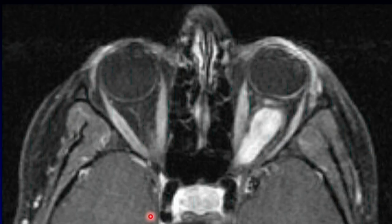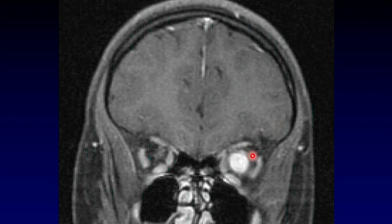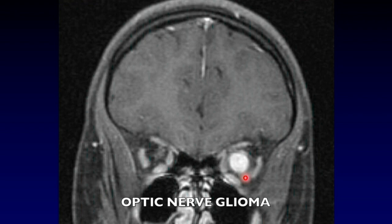Here's a lesion that is running right along the expected course of the optic nerve. When we see it in coronal image, it is uniformly enhancing and it is a mass of the nerve itself. There is no preserved central nerve — this is the nerve expanding and enlarging. This is what an optic nerve glioma looks like.